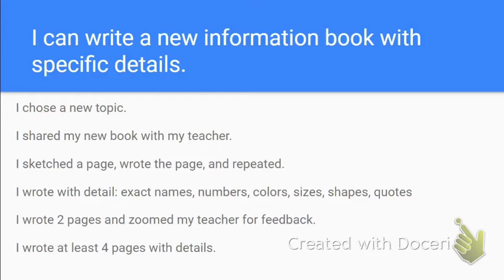You'll know that you have succeeded if you've done these six things. Most of these are things you've already learned how to do, so don't worry about it too much. You are going to choose a new topic, share your book with your teacher — those should be easy. Sketch a page, write a page, and repeat. You should be able to use the Whiteboard app to sketch a page and the Slides app to write a page and repeat.